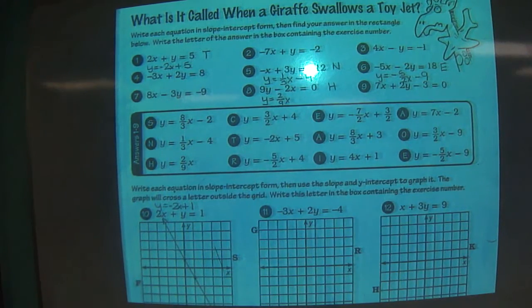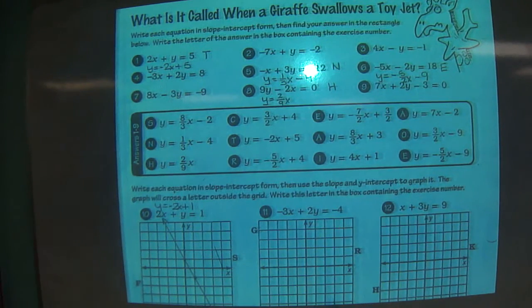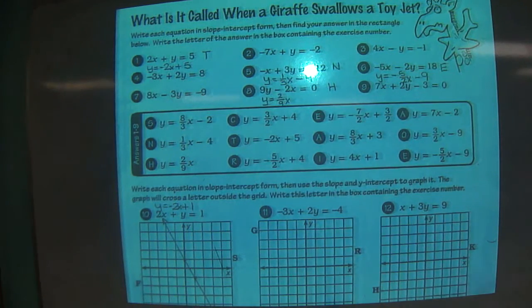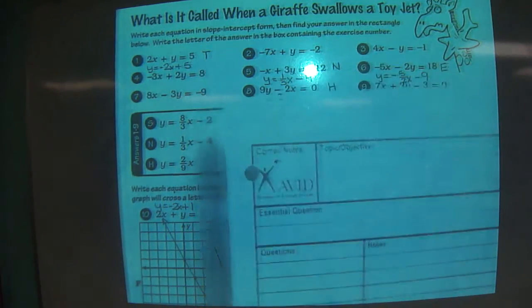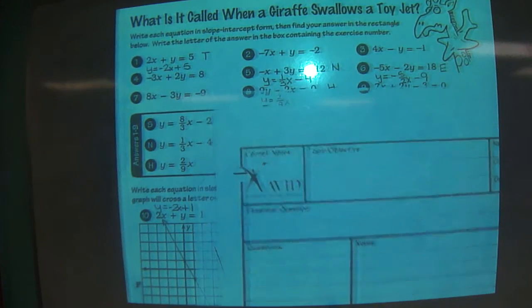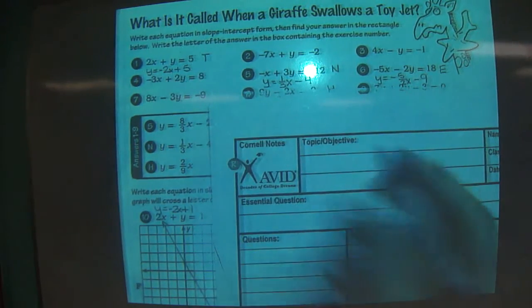Now what is it called when a giraffe swallows a toy jet? This is also slope review, but this slope review is a little different because we're far more comfortable with y equals mx plus b. Am I correct? Yeah, but sometimes we've got to change it around. Like number 5.